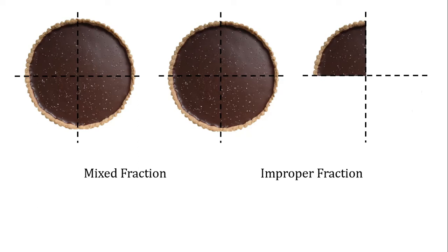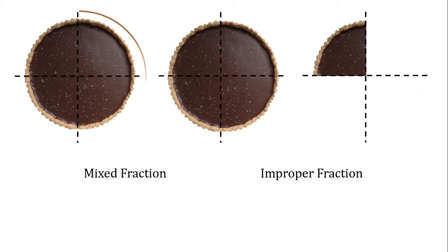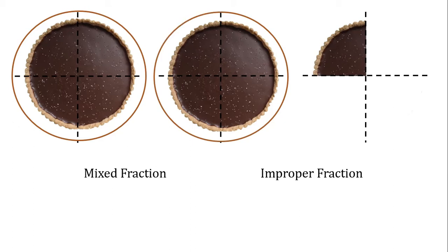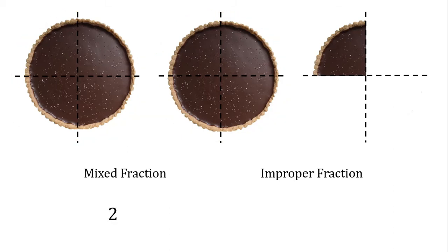A mixed fraction has a whole number and then the parts. So let's start by looking at how many whole chocolate pies there are. One, two — two whole chocolate pies. So for our mixed fraction, we're going to write two. Then what about for our parts? Our parts are fractions, and the fraction needs a fraction line.